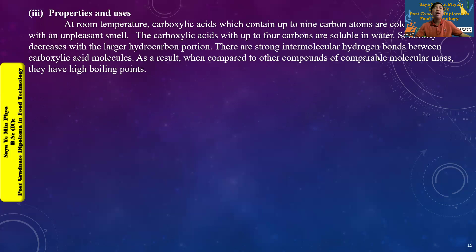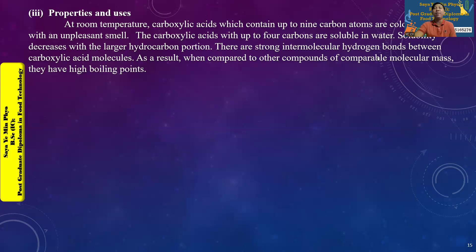Carboxylic acids are strong in intermolecular hydrogen bonding. The molecular hydrogen bonds result in higher boiling points when compared to other compounds of similar molecular mass. This is due to the strong intermolecular hydrogen bonding between molecules.